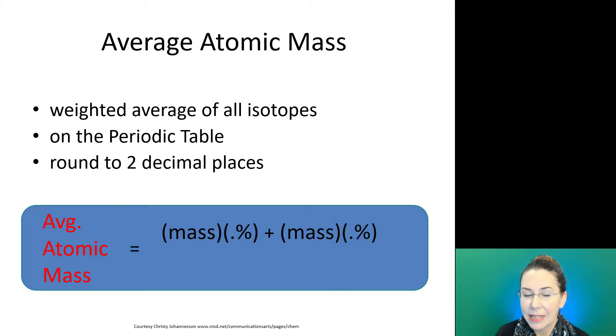When we want to calculate the average atomic mass, we're going to take our mass of each isotope, multiply it by its percent abundance after we have converted that percent abundance into a decimal. And we'll add that together for each existing isotope. That will give us our weighted average of our masses of our different isotopes because they're all existing in different percentages.